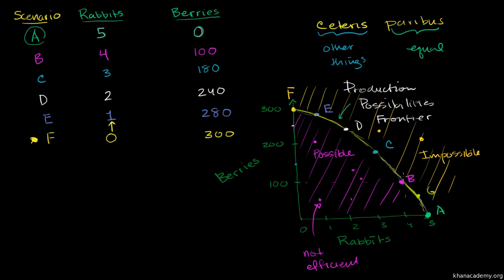If I go for that extra rabbit, then what's going to happen? Well, I'm going to have to stay on my production possibilities frontier, and so I'm going to move to Scenario E. So if I go after that one extra rabbit, I am going to give up 20 berries. So my opportunity cost in Scenario F of going after that one rabbit is 20 berries.